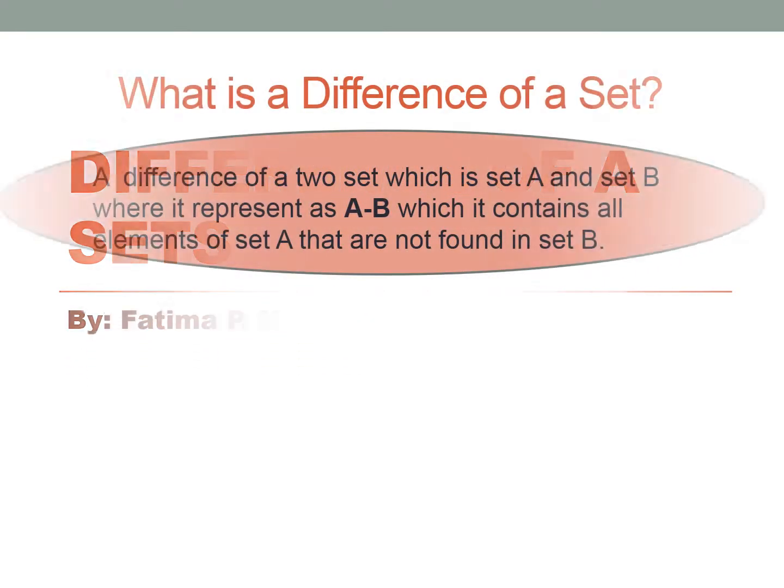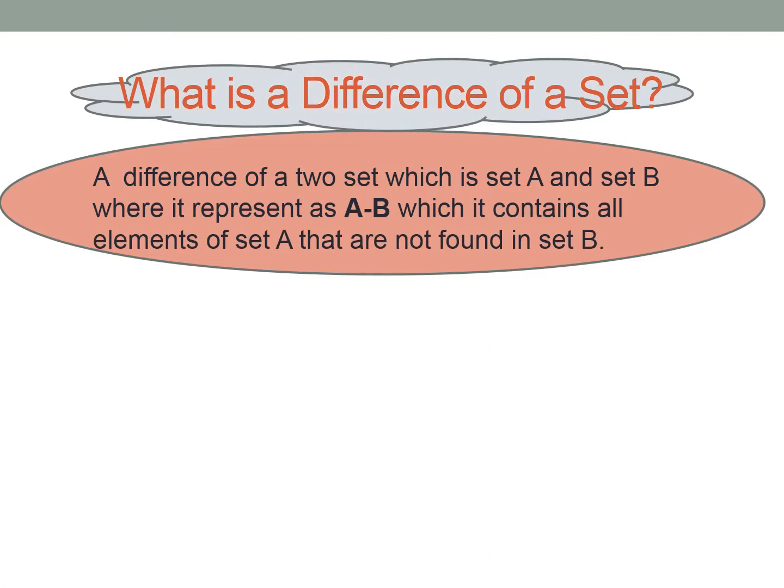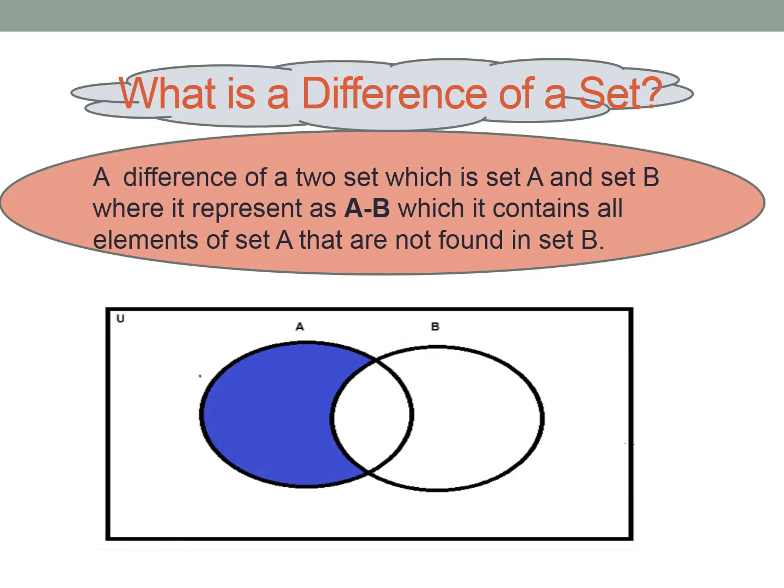So what is set difference? A difference of two sets, which is set A and set B, is represented as A minus B, which contains all elements of set A that are not found in set B. For instance, in our Venn diagram, A is shaded because, from the definition, all elements of set A that are not found in set B — so A minus B is shaded.